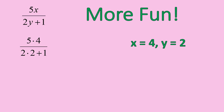We're going to do all the multiplication in this next step. 5 times 4 is 20, 2 times 2 is 4. Then we'll simplify the denominator, 4 plus 1 is equal to 5.